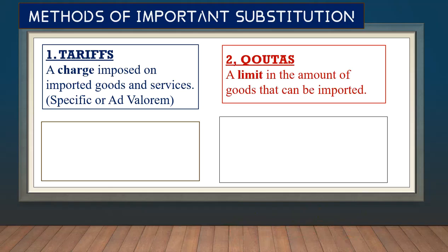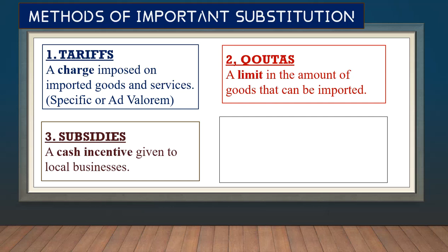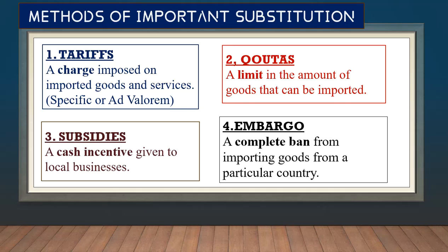A quota is a limit on the amount of goods that can be imported — countries are given a limit on how much they can import. Subsidies are cash incentives given to local businesses so that they can continue to grow. An embargo is the strictest measure — it is a complete ban on importing goods from a particular country.